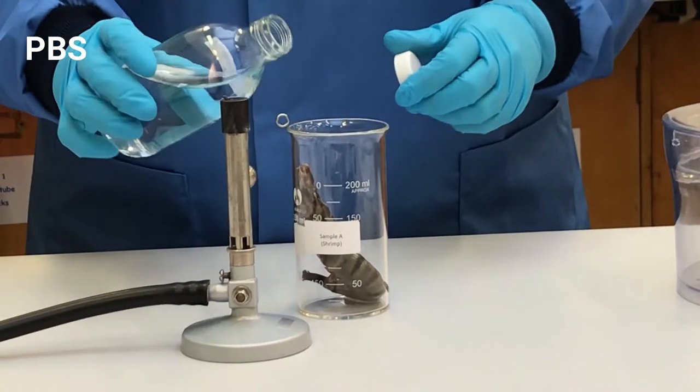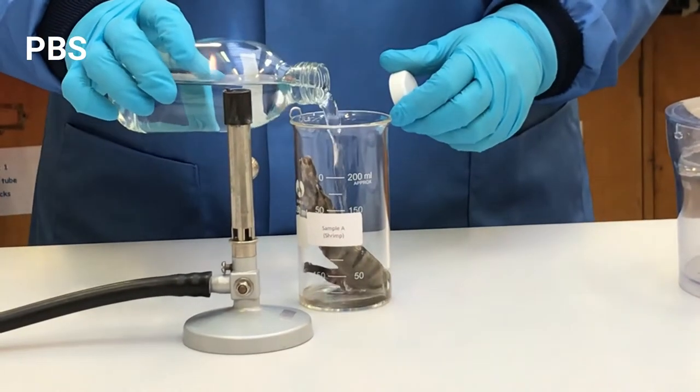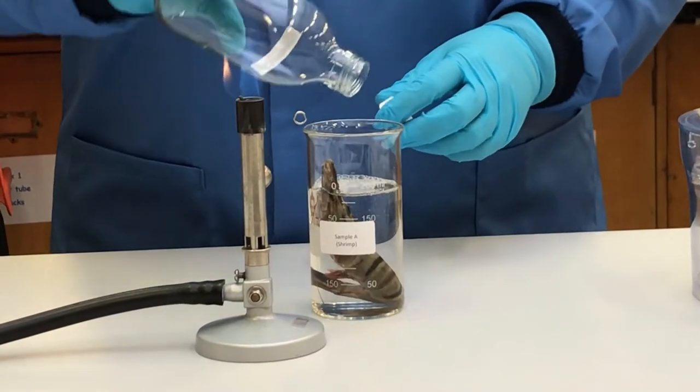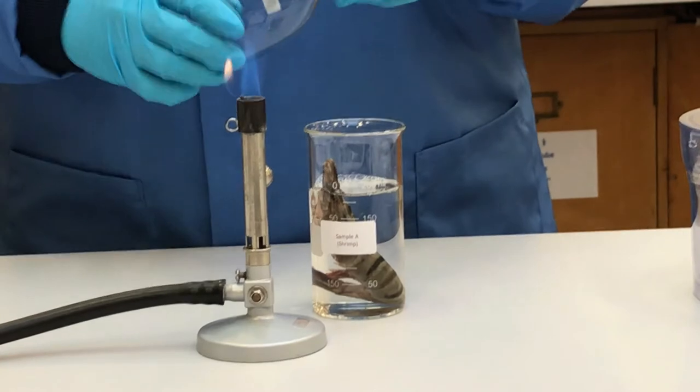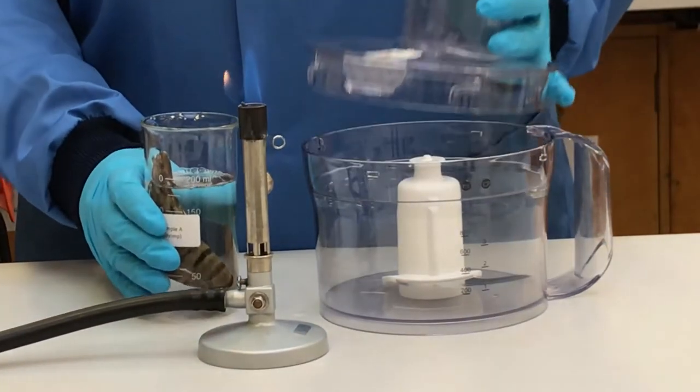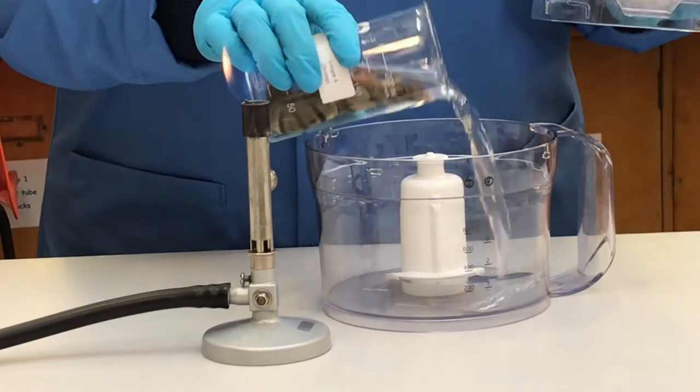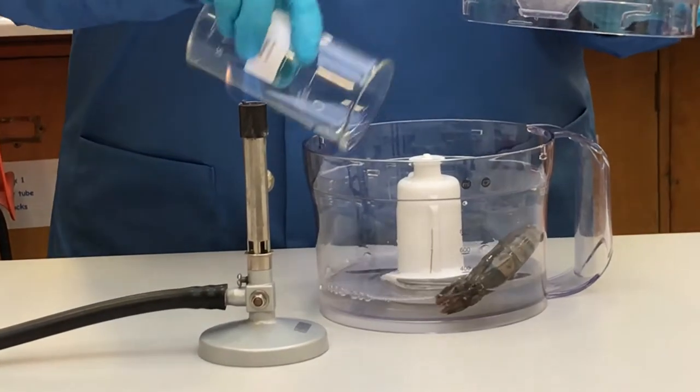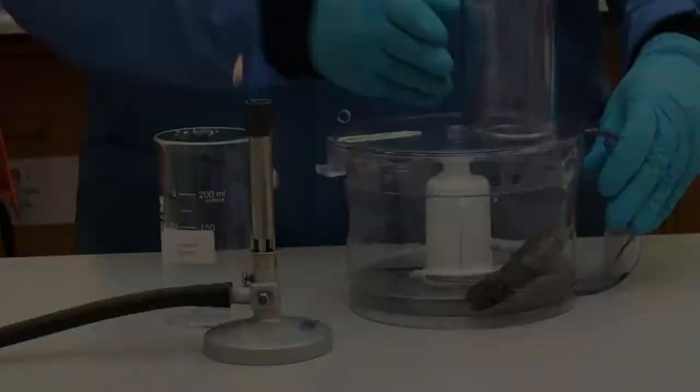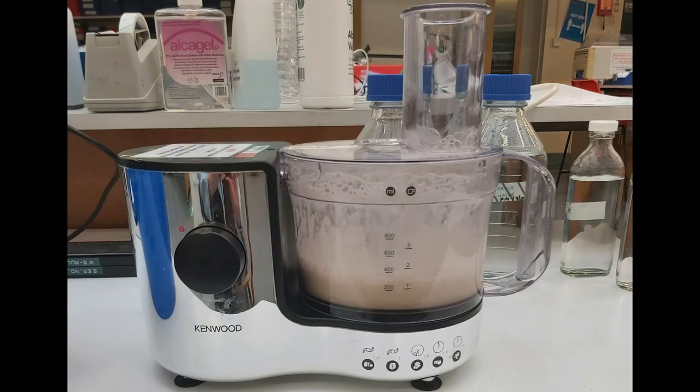Firstly, 180 ml of phosphate buffered saline is added to Sample A. This is then transferred to a blender and blended for 5 minutes. Please note that Sample B has been prepared in exactly the same way. This blended mixture represents the 10 to the minus 1 dilution, as 20 grams of shrimp has been blended in 180 ml of saline.